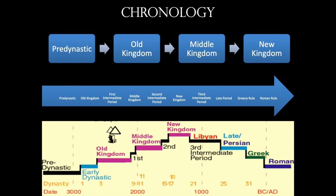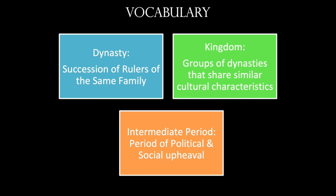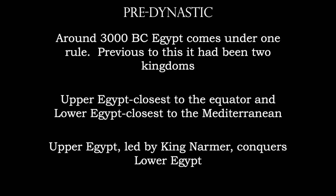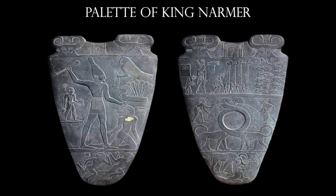Between kingdoms are what are called intermediate periods of political instability. Vocabulary to know: a dynasty is a succession of rulers of the same family — for instance, Akhenaten, Nefertiti, and Tutankhamun are all the same dynasty. Kingdoms are groups of dynasties sharing cultural characteristics. With the pre-dynastic era, we have the unification of Upper and Lower Egypt led by King Narmer, who became the very first pharaoh. Make sure you're familiar with the Palette of King Narmer — the imagery, the different narratives present, and how Upper and Lower Egypt come together.